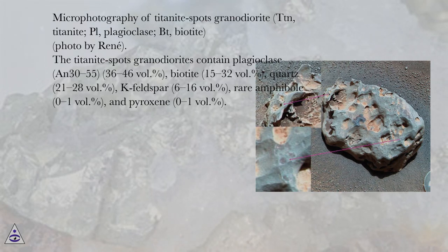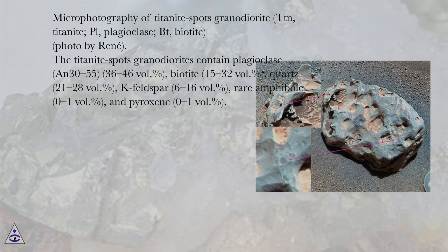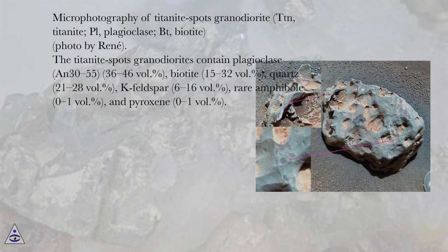The titanite-spots granodiorites contain plagioclase (N3055) at 36–46 volume percent, biotite at 15–32 volume percent, quartz at 21–28 volume percent, K-feldspar at 6–16 volume percent, rare amphibole at 0–1 volume percent, and pyroxene at 0–1 volume percent.